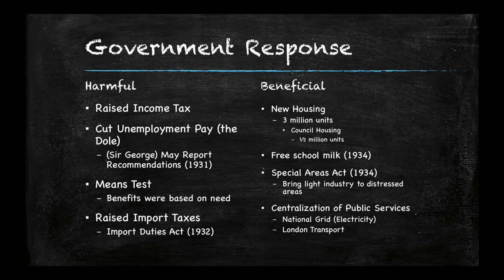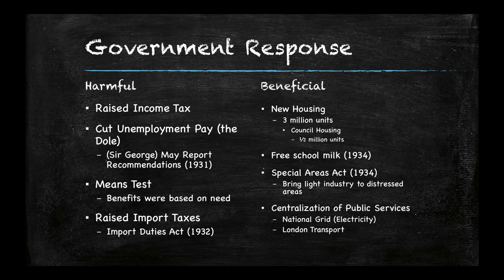They also raised import taxes so only the wealthy could afford to buy imports. On the other hand, there were some good things that came about. New housing: they established millions of new housing units and put local councils in charge of finding poor people to go into this housing. There was free school milk. There was the Special Areas Act, which was beneficial in bringing light industry to distressed areas — more modern industry rather than heavy old labor-intensive industries — to hopefully provide more jobs. There was also a centralization of public services such as electricity and London Transport, the metro system and the bus system, to better serve the people rather than leave it to a private owner.